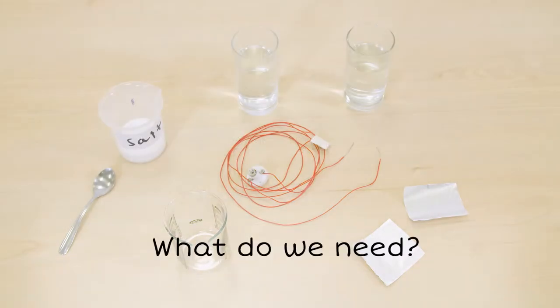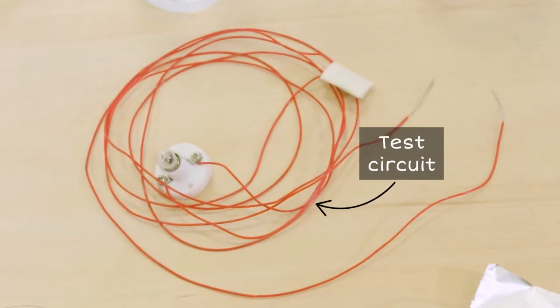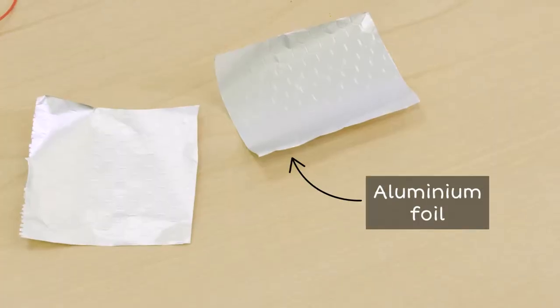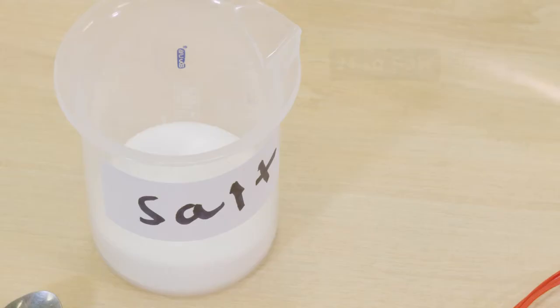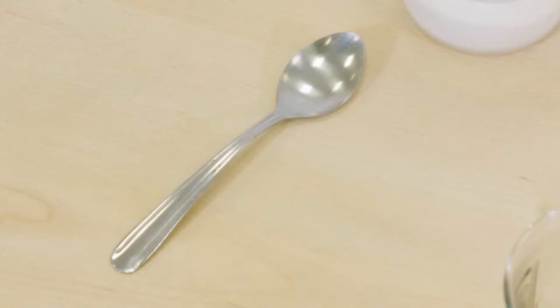This is what we will need: a test circuit, pieces of aluminum foil, distilled water, a beaker, two teaspoons of salt and a teaspoon.